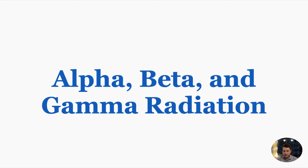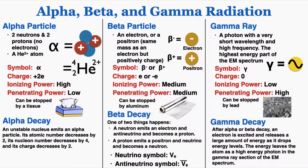This lecture is about alpha, beta, and gamma radiation. Alpha, beta, and gamma are three different particles that a radioactive nucleus can emit in order to become more stable, and alpha, beta, and gamma decay are each names for the process of emitting that specific particle. A lot of physics doesn't require much memorization, but this is one of the few areas that does. You're going to need to memorize all of the information that I've listed here about each type of particle.